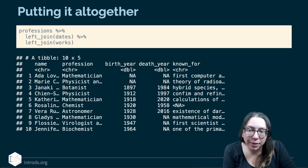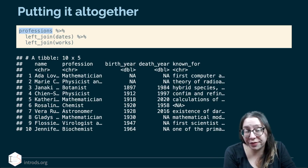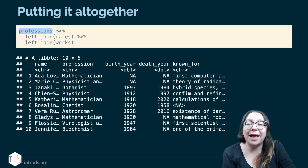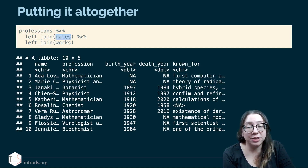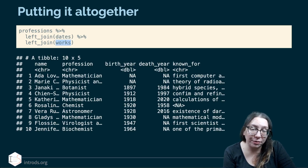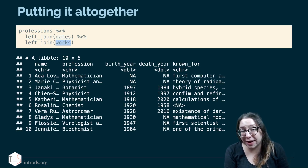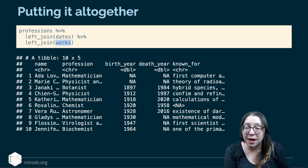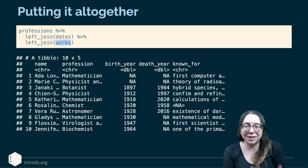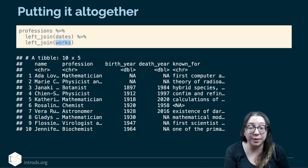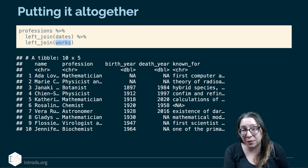Putting it all together, the best approach is to start with the professions data frame since it has all 10 rows, then left join dates to bring in birth and death years, then left join works to bring in the 'known for' column. This gives us the desired 10-by-5 data frame. We didn't need to specify the matching column because name was the only column shared across all three data frames — though names must be spelled exactly the same for this to work.